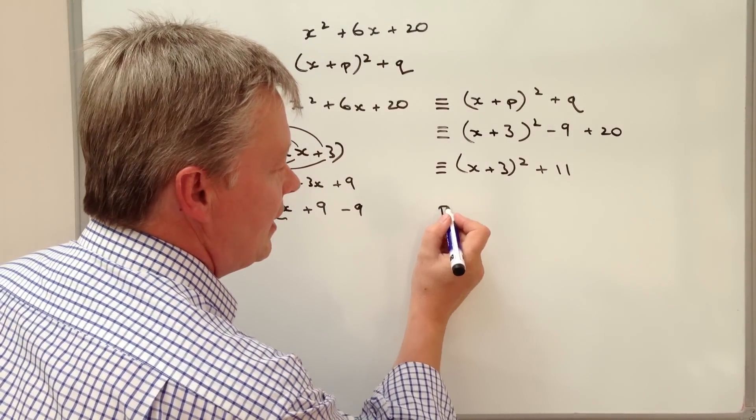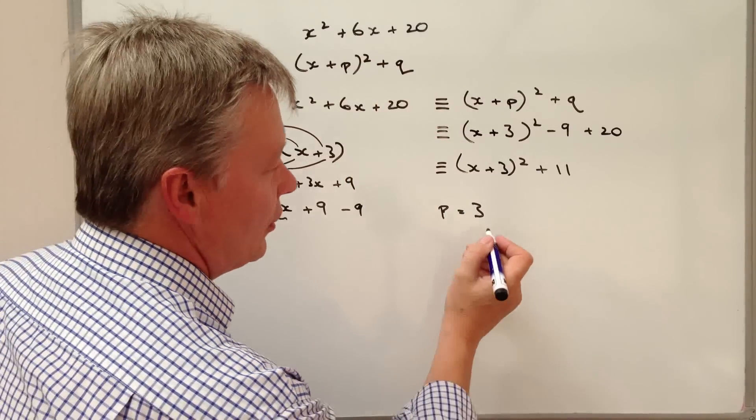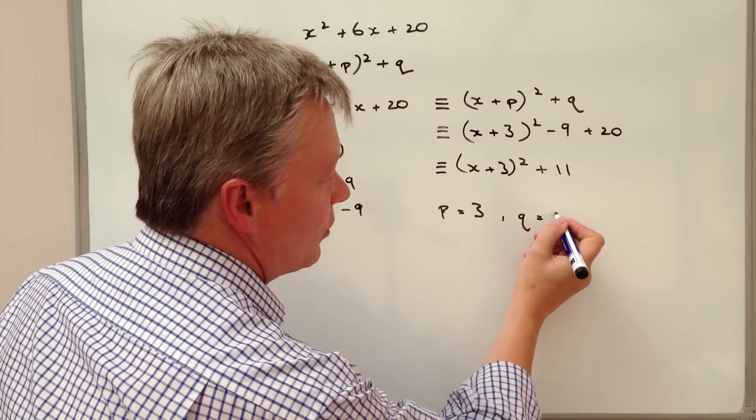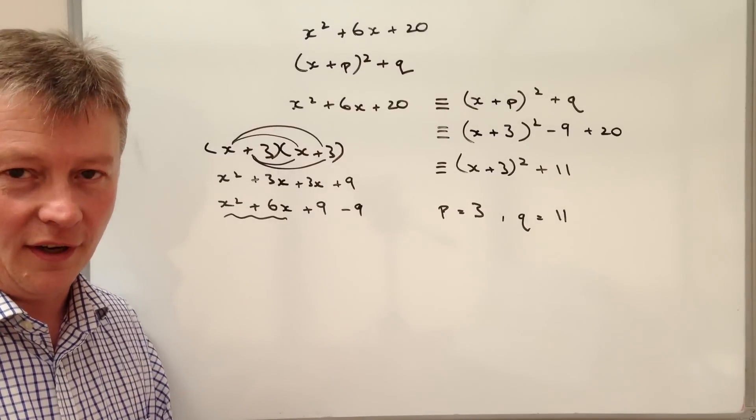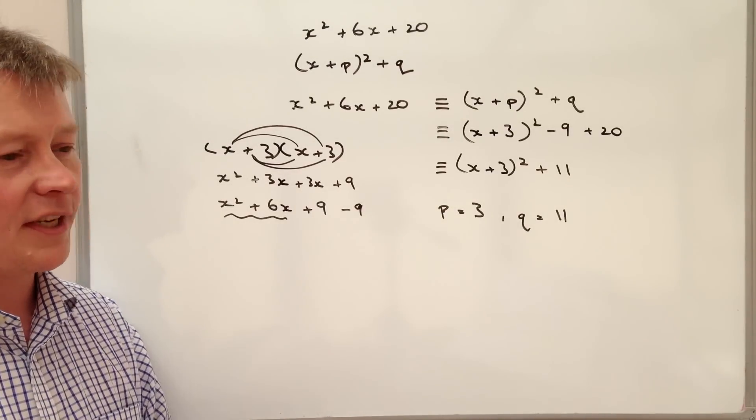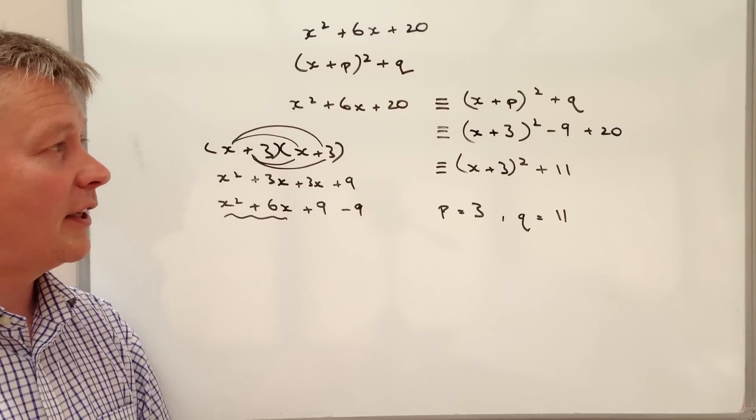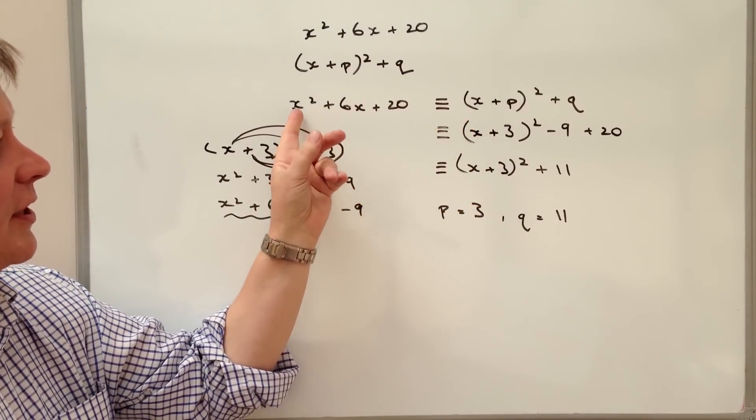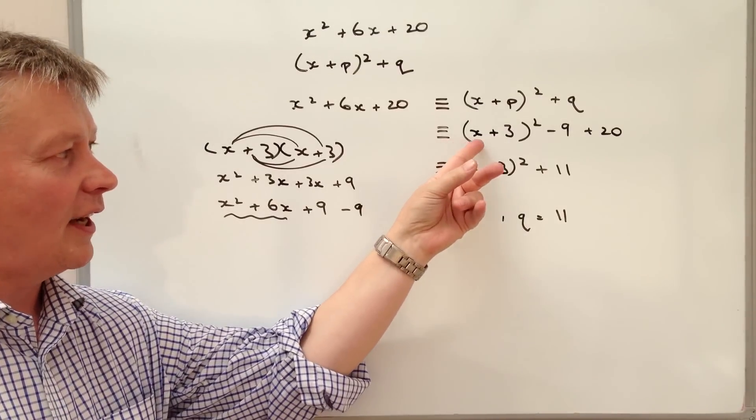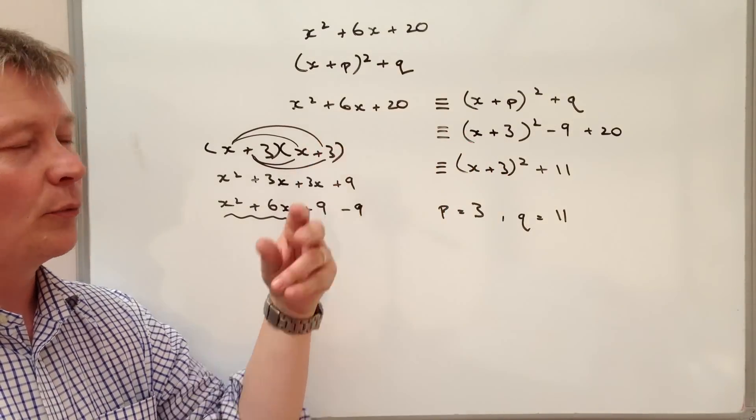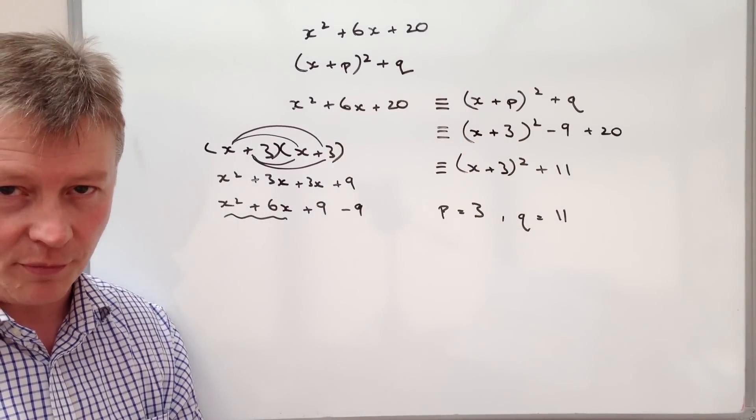That would give me a value of p as equal to 3 and a value of q as equal to 11. So the steps are that when you're writing things as completing the square, when you're writing the equivalent completing the square, you need to look at the first value as x squared and we take out the x. And then the second value we halve. So we put that into brackets and we square those brackets.